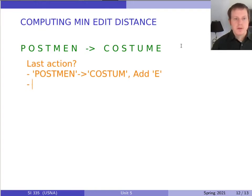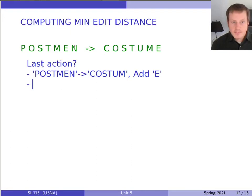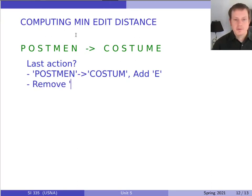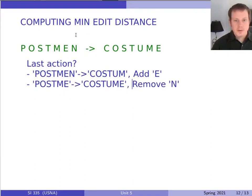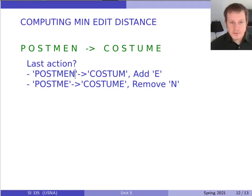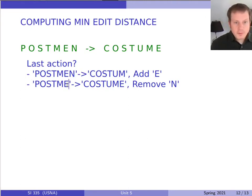What else could the last action be? Another thing it could be is to remove the 'n' — we might be removing the last letter from the first word. So what would it mean if the last thing we do is remove the 'n' from 'postman'? That would mean we somehow turned 'postma' into 'costume', and then we remove that last 'n'. In option one we're turning the entirety of the first word into the second word except the last letter, then add that last letter. In option two, we turn all of the first word except the last letter into all of the second word, and then remove the last letter of the first word.